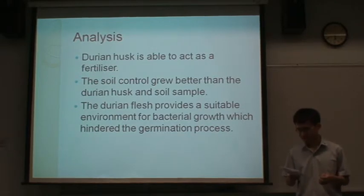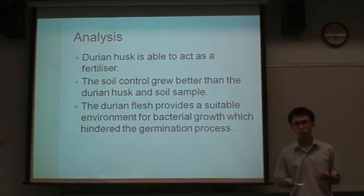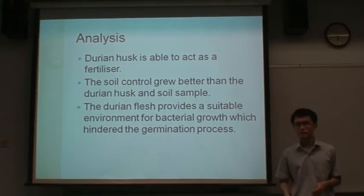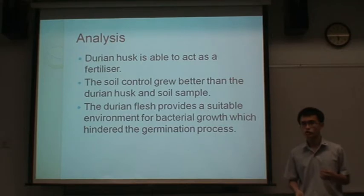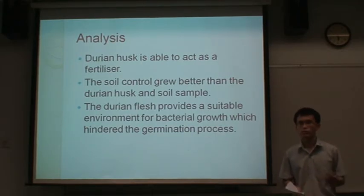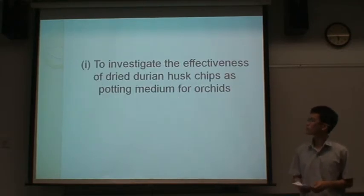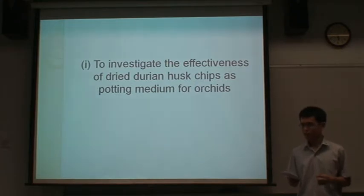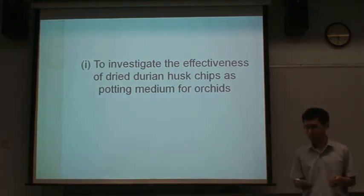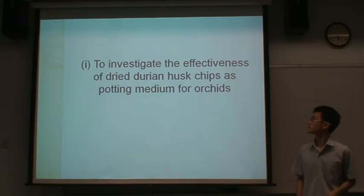Therefore, we need to investigate the use of the Durian Husk as a growing medium instead. In this case, there is a slight change from Kailan to Orchid, as Kailan does not require a growing medium for growth. I shall now introduce the second part of the project, testing the effects of the Durian Husk as a growing medium for orchids.